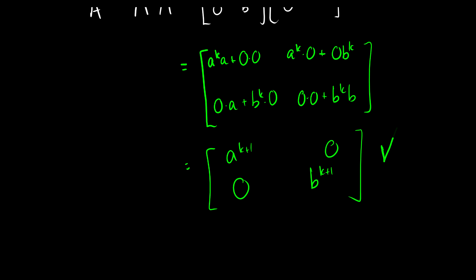So we've proven the induction step. Therefore A^(k+1) equals the matrix [a^(k+1), 0; 0, b^(k+1)], which is exactly what we needed to show. If you have any questions, please leave them in the comments below and I'll answer them the best I can.